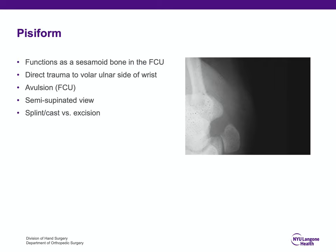If there is marked displacement of the pisiform fracture or marked articular incongruity, the treatment would be simple excision, which is commonly done for pisotriquetral osteoarthritis at the joint, as seen on this radiograph.